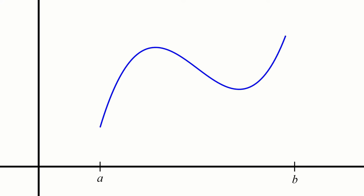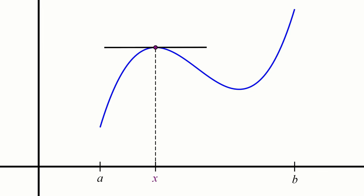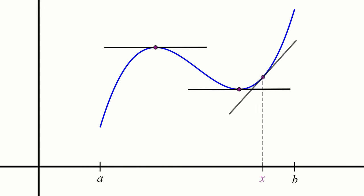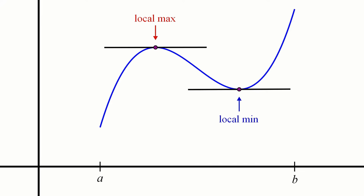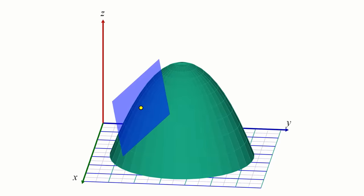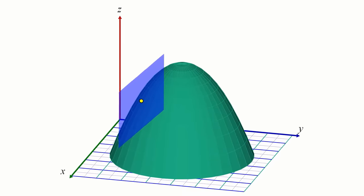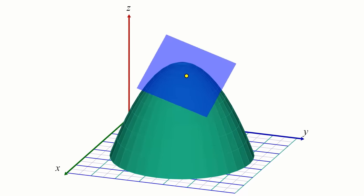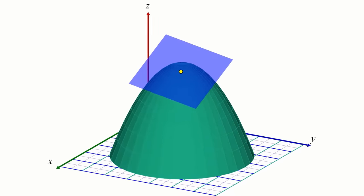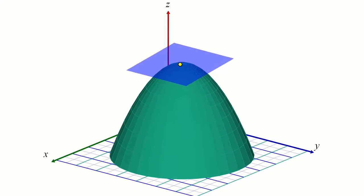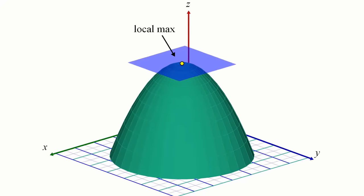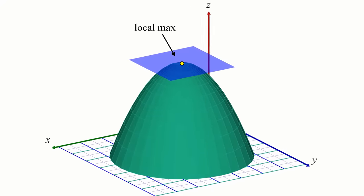Remember back in single variable calculus, we could find the maximum and minimum of a function by setting the function's derivative equal to 0 and solving for x. The idea was that a function attains a local max or min where its tangent line is flat. This carries over in the world of multivariable functions to setting the gradient of our multivariable function to 0, which is equivalent to setting all partial derivatives equal to 0 and then solving the resulting system of equations.